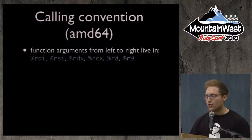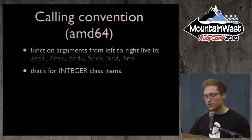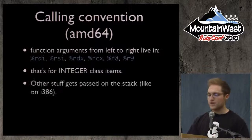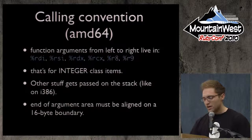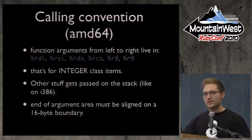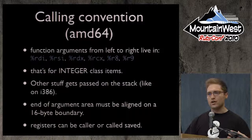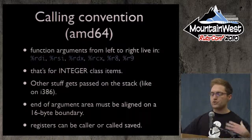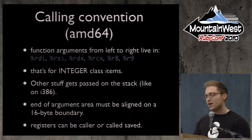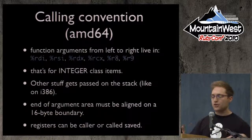For calling conventions: arguments live in registers from left to right — the first argument in RDI, second in RSI, and so on, for integer-class items. Stuff also gets passed on the stack. Importantly, the end of the argument area must be aligned on a 16-byte boundary to comply with the ABI. There are also strict contracts about which registers the caller must save versus which the callee must save.